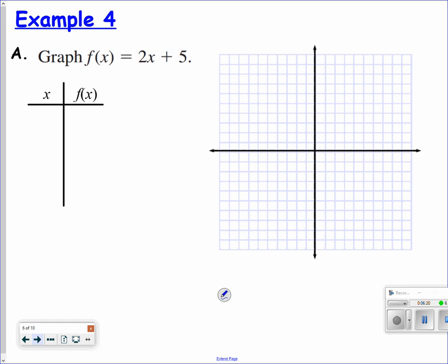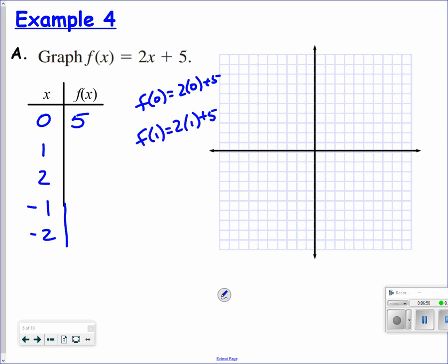Graph f of x equals 2x plus 5. So I'm going to put numbers in for x. I randomly chose these numbers: 0, 1, 2, negative 1, negative 2. I want a minimum of 3 to 5 points. What this means is I want to know if I plugged 0 in for x, what would I get for f of 0? So 2 times 0 plus 5, I would get 5. f of 1: I'd get 7. f of 2: I would get 9. f of negative 1: 3. f of negative 2: 1. I am plugging negative 2 in for the x's and deciding what I would get for f of negative 2.